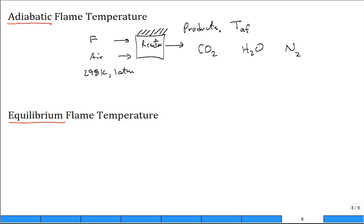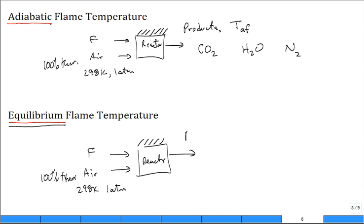What's the difference now with the equilibrium flame temperature? Well, we still have a reactor. The reactor is well insulated. We still bring in the same fuel. We still bring in the same amount of 100% theoretical air. We still bring it in at 298 Kelvin and 1 atm. All of this is the same. We do have products come out, but the products are at a lower temperature, the equilibrium flame temperature.